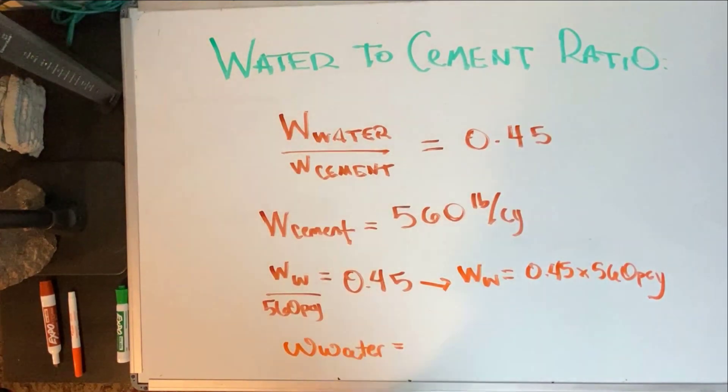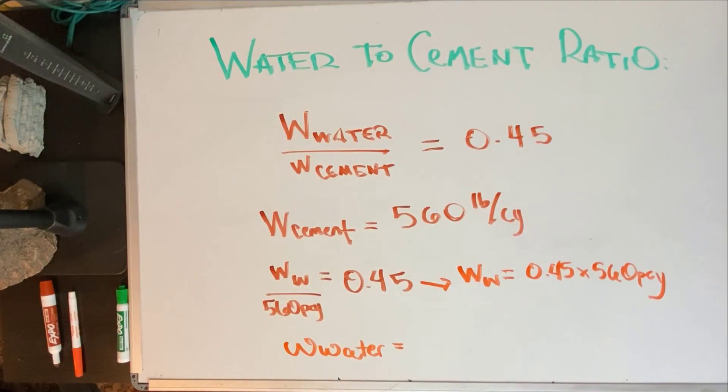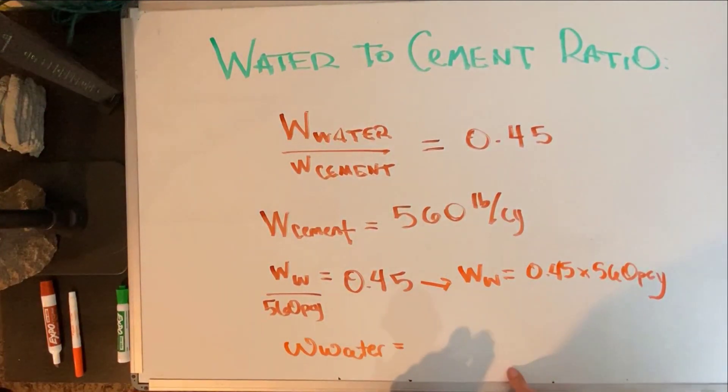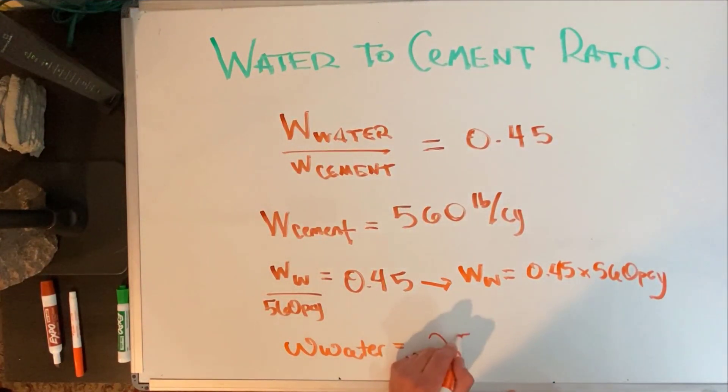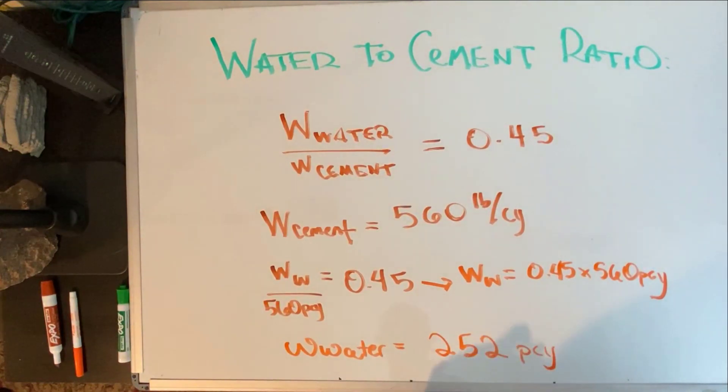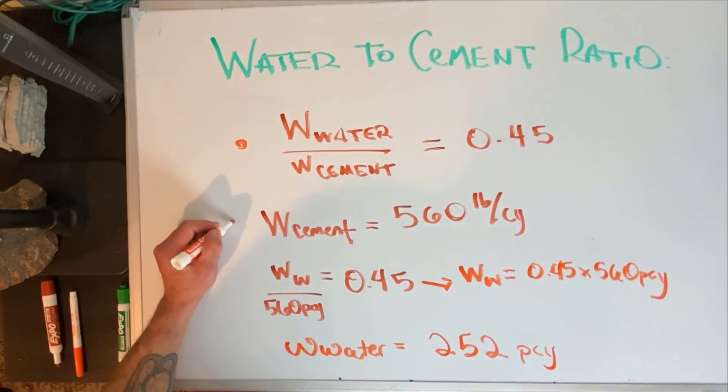Let me get a calculator. 560 times 0.45 equals 252 pounds per cubic yard. Okay, there you go, that's how you do it.